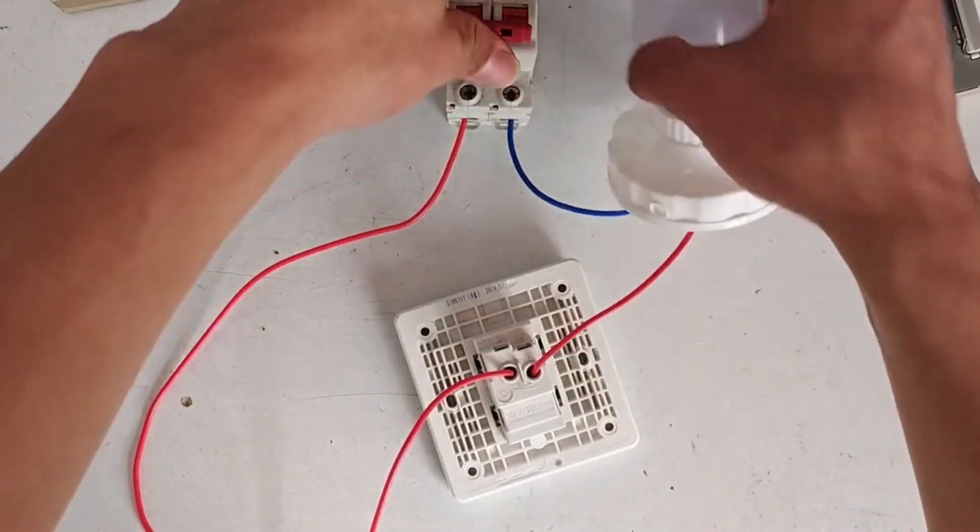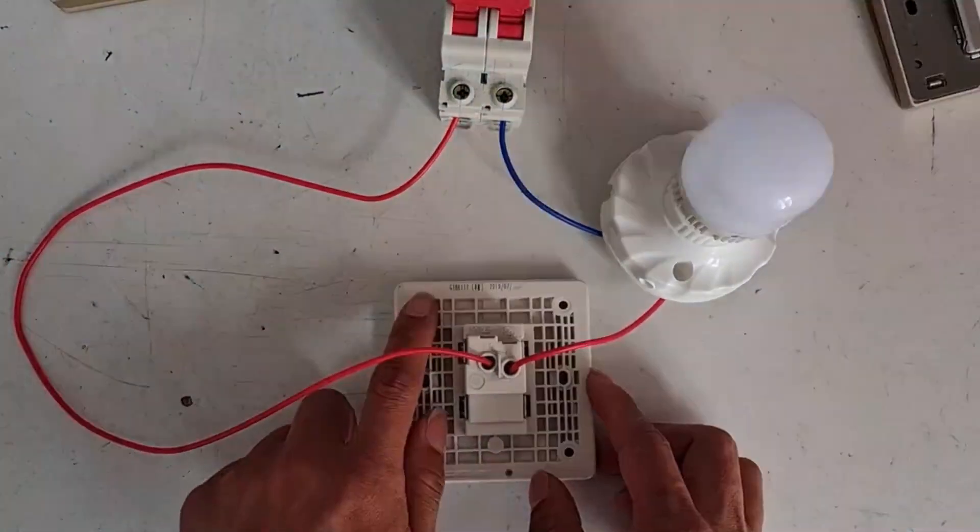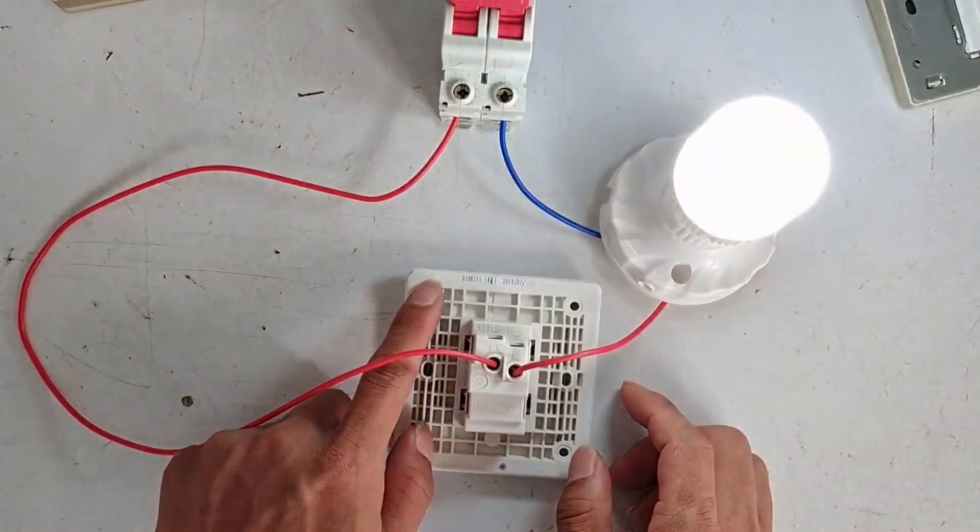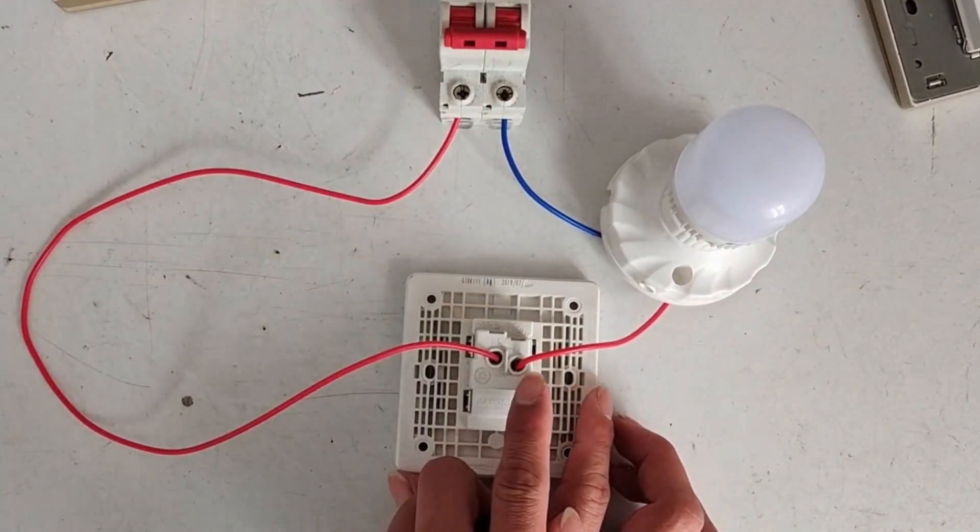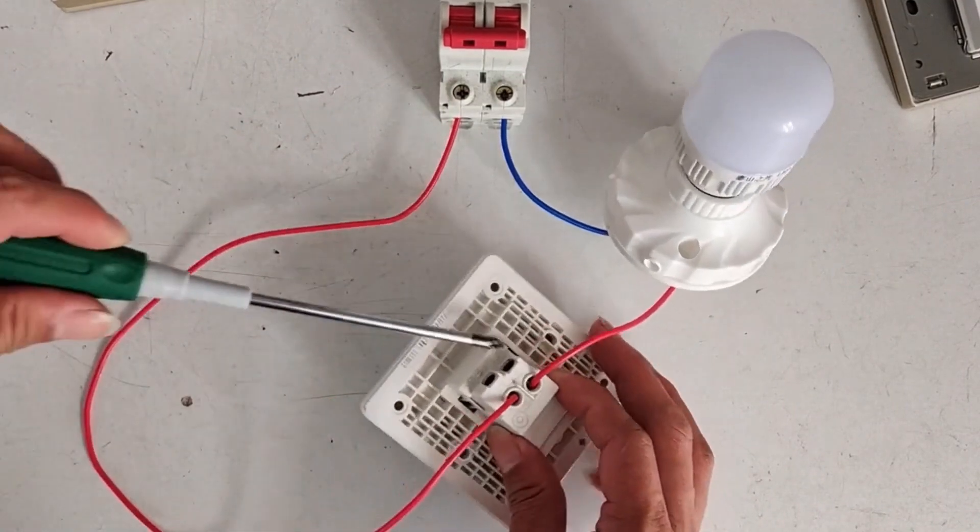You can control this light with the switch. Turn it on and off. The process of turning on and off the light mainly controls the process of turning on and off the fire wire.